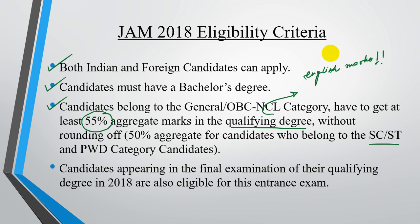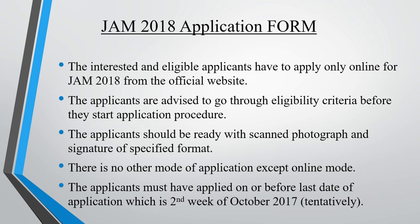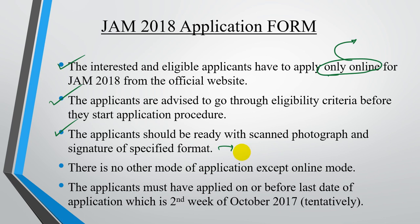For the JAM application form, interested and eligible applicants have to apply only online — there is no offline version. Applicants are advised to go through the eligibility criteria before starting the application procedure, and should be ready with a scanned photograph and signature in the specified format available on the website. The last date for application is the second week of October.